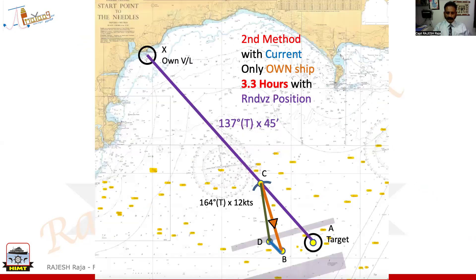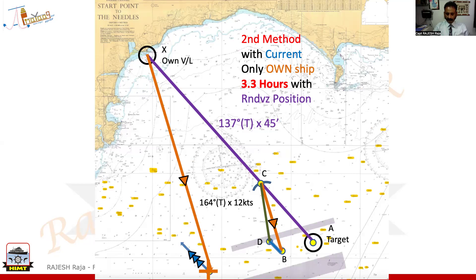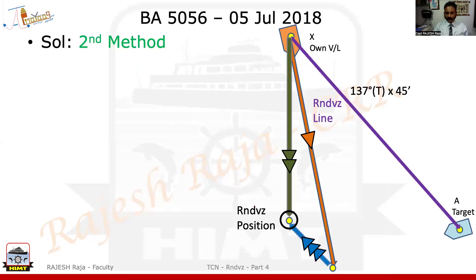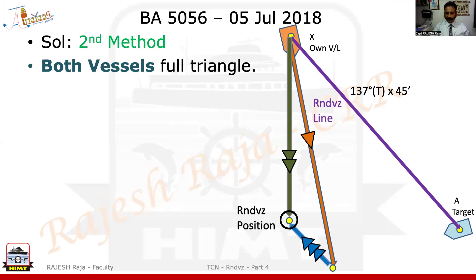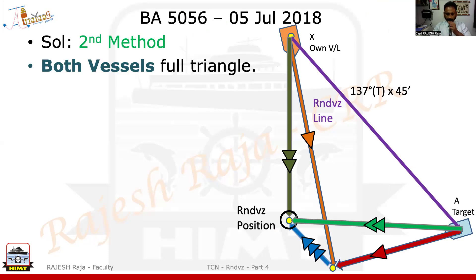Let me show you this on the chart. This was the one-hour triangle we used already, but this time I am going to use the full 3.3 hours. This is the DR — apply the current for 3.3 hours, which is exactly the same for me and for the target. What I achieve is the rendezvous position, and this is my CMG. Now if I club both triangles for the full 3.3 hours, you can see the CMG tracks, and after 3.3 hours the CMG of both vessels are meeting.